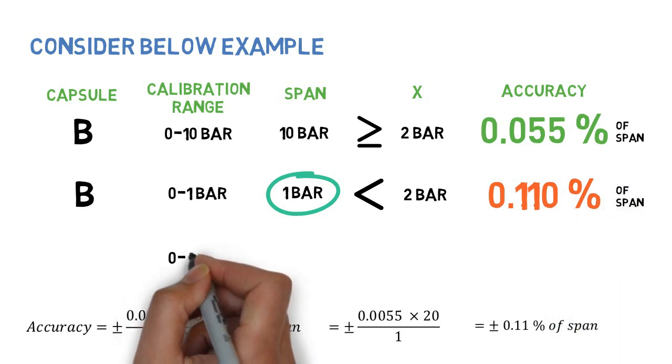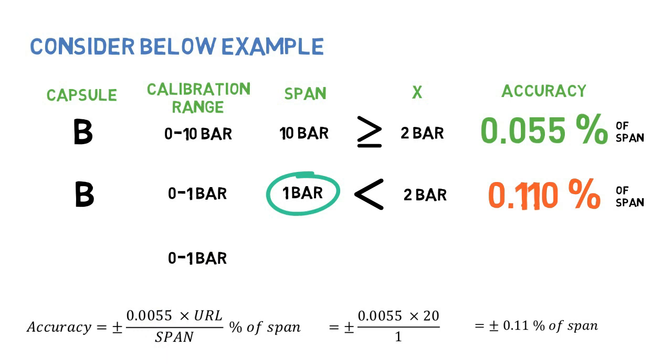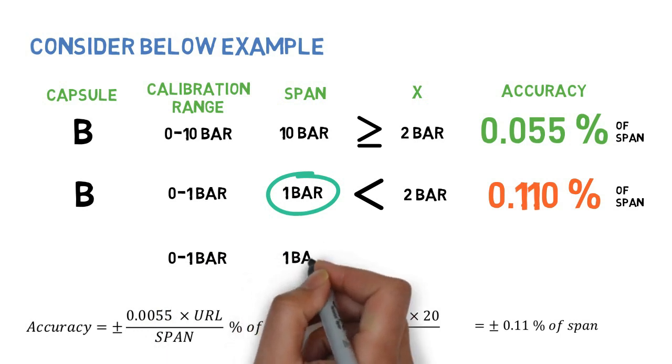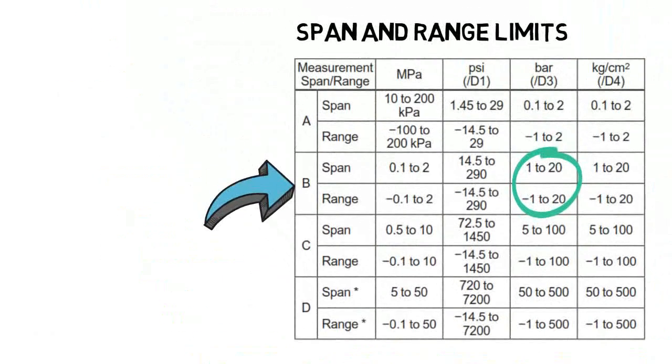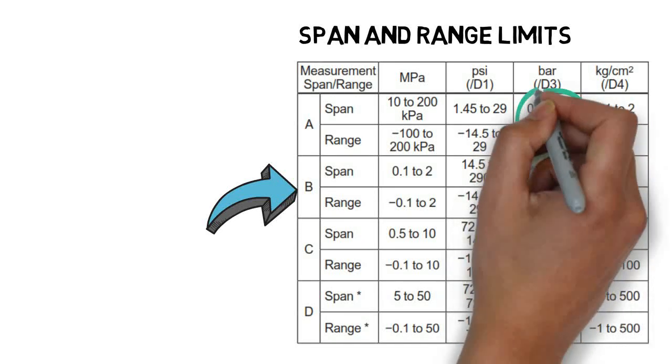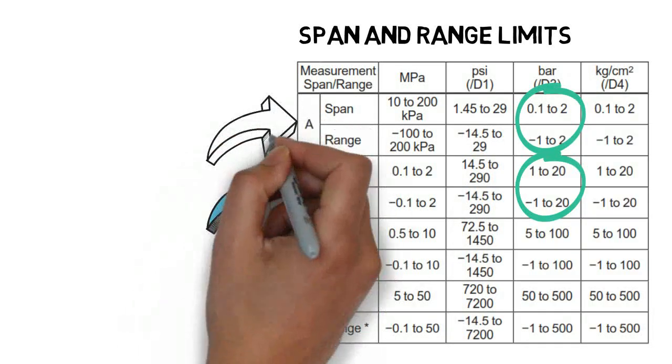Consider another range of 0 to 1 bar. Span is 1 bar. Now selecting capsule A, based on range of 0 to 1 bar.